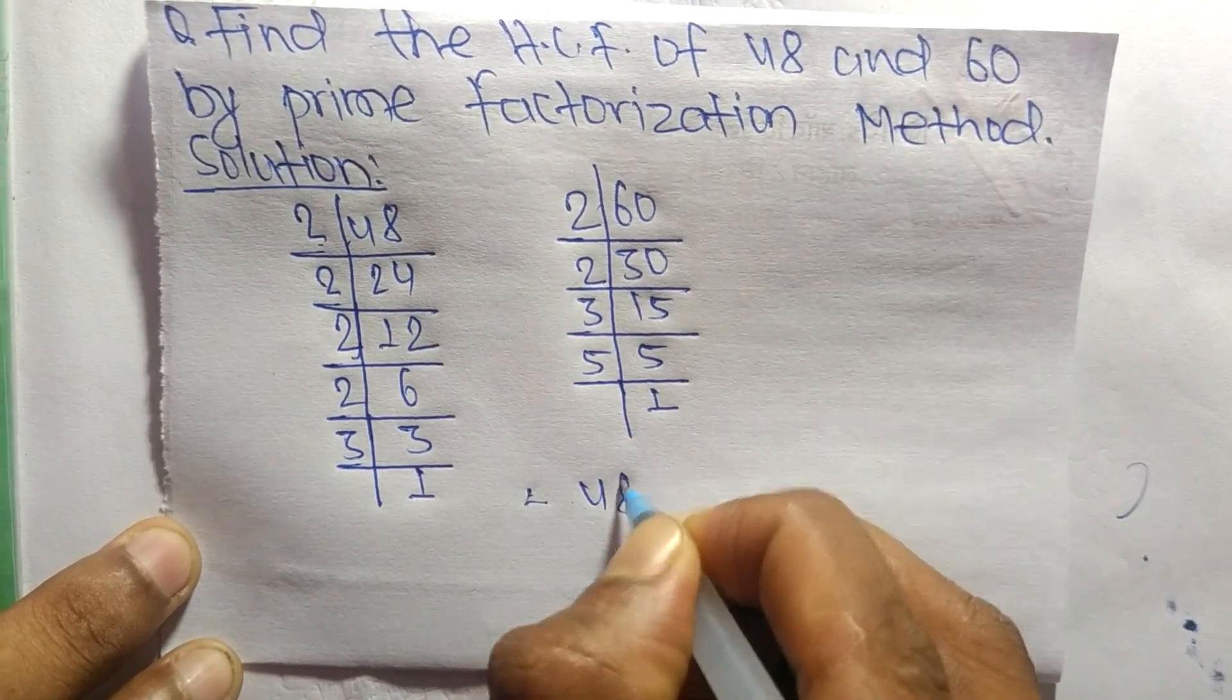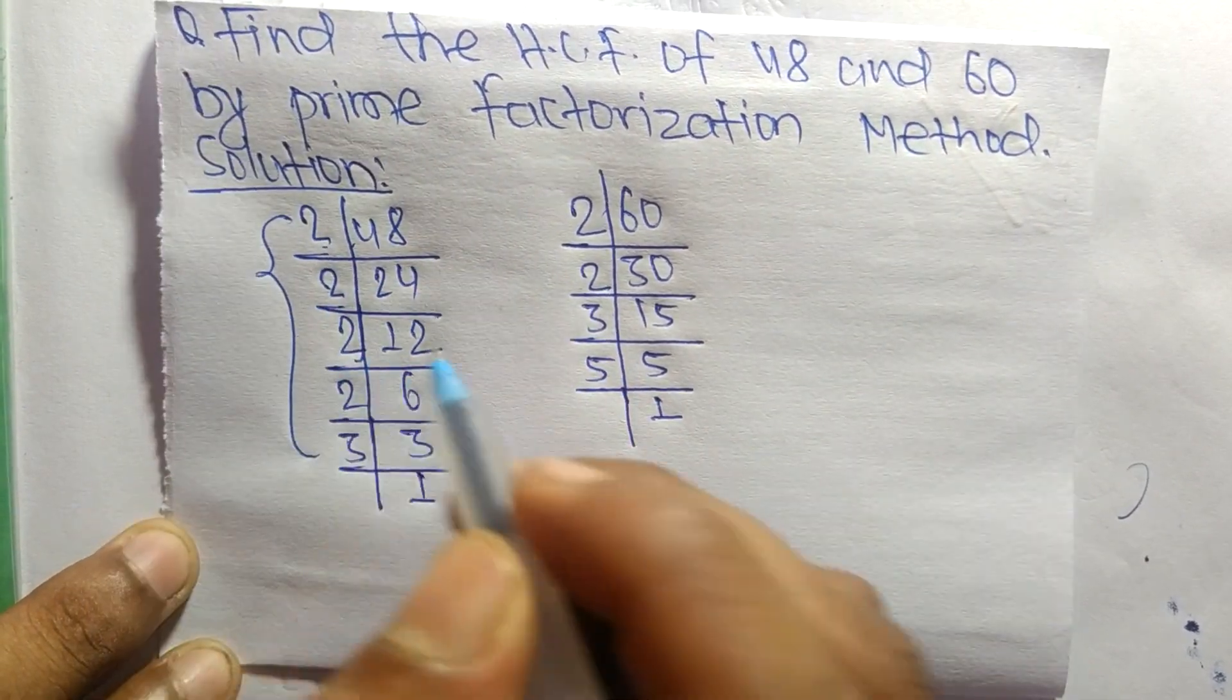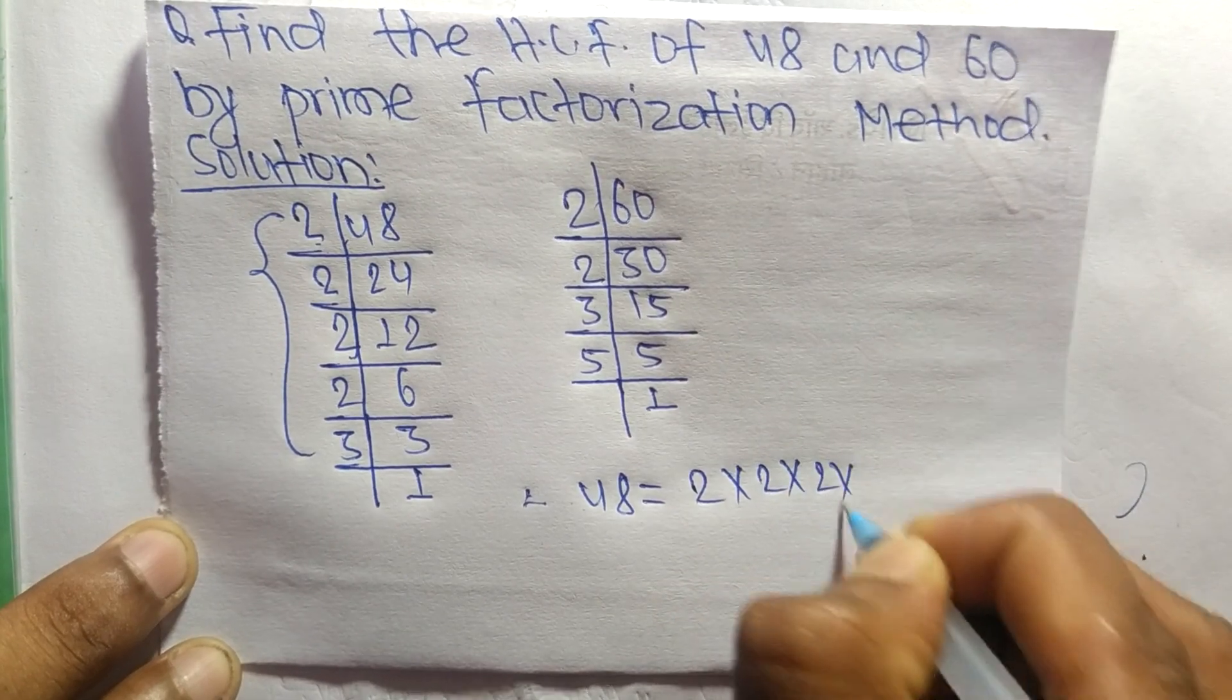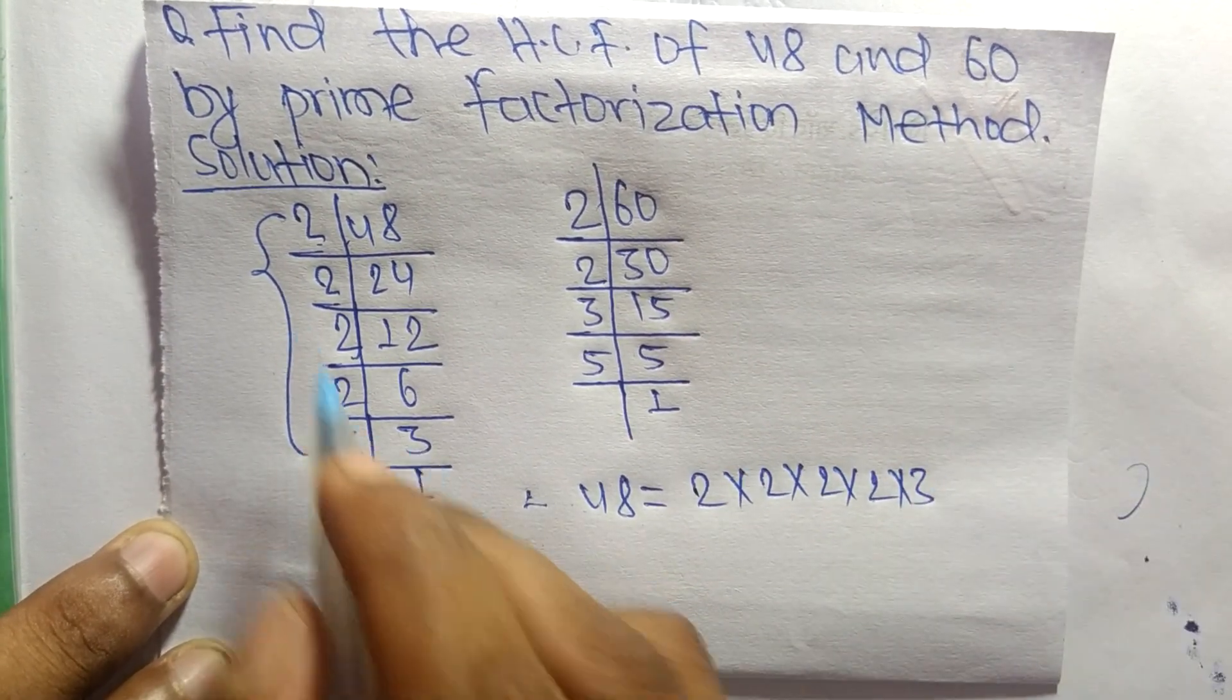Write 48 equals 2 times 2 times 2 times 2 times 3.